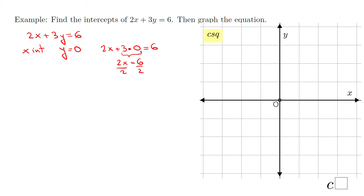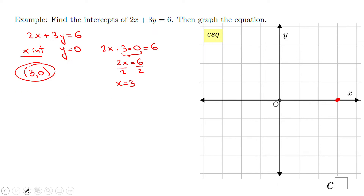We solve for x by dividing by 2, giving x = 3. So the x-intercept is (3, 0) — x is 3 and y is zero. I suggest you always write the intercept in this ordered-pair form. You can then plot the point (3, 0), which means go 3 to the right.